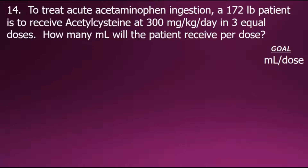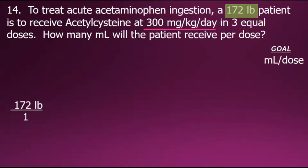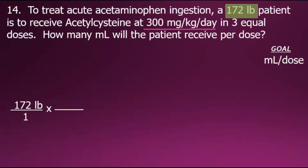To begin this pharmacology problem, we'll start with the doctor's orders. The doctor's order for this medication is based on the amount of weight to determine the amount of medication. We will begin with the patient's weight, shown here as a fraction with a denominator of one. The weight, however, is in pounds, and the medication is based on the weight in kilograms.